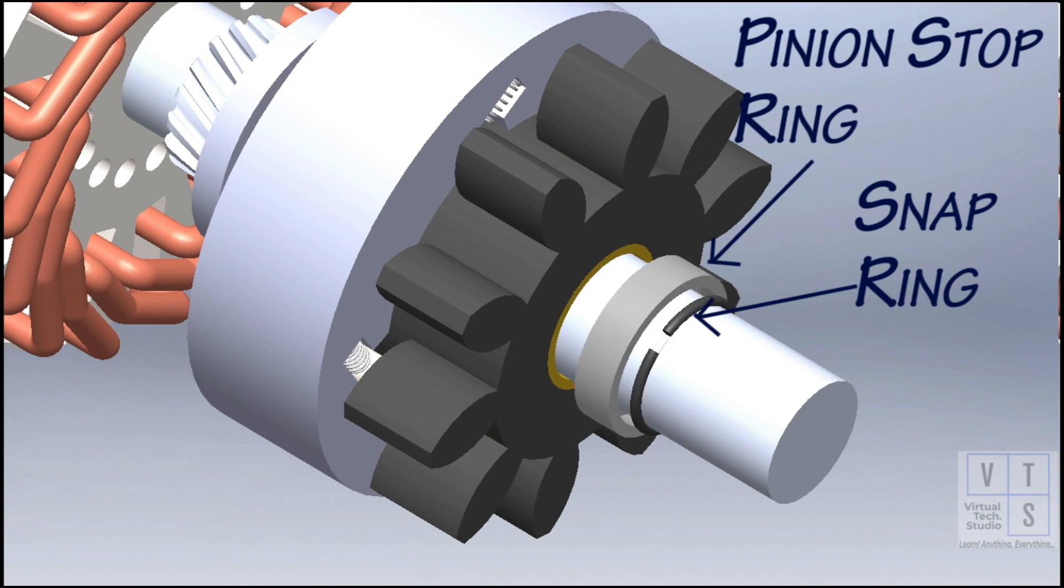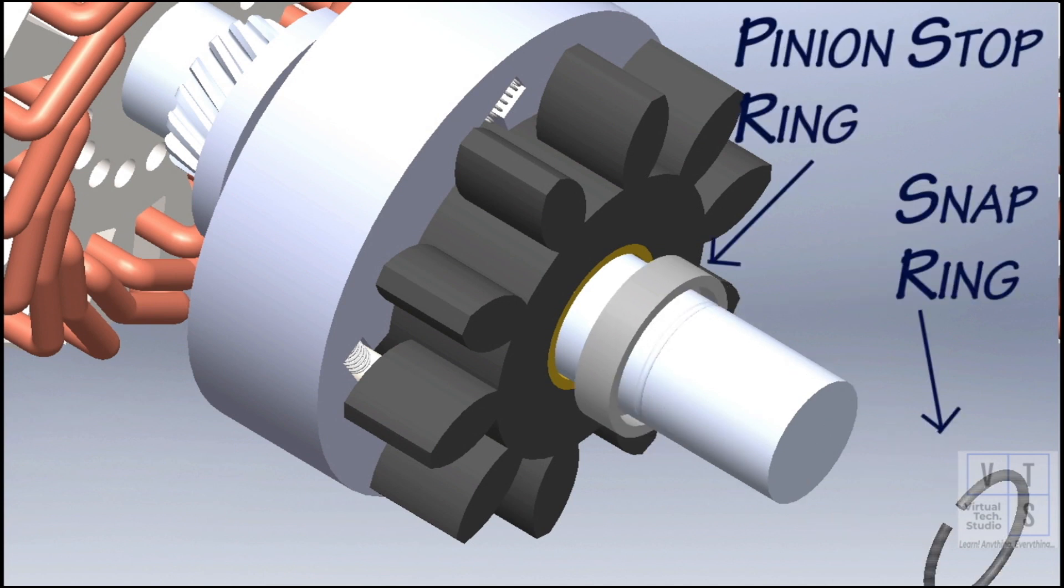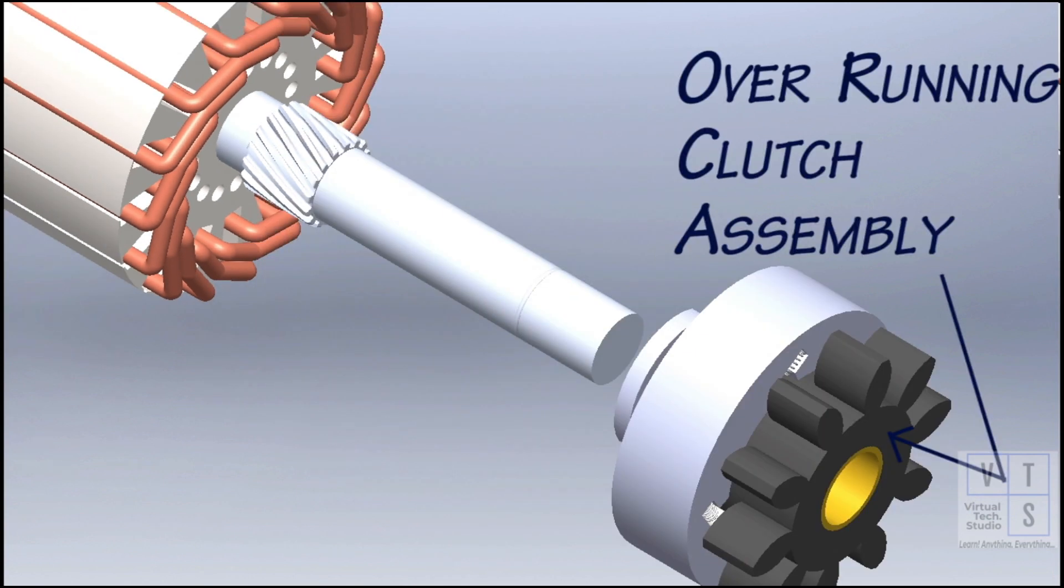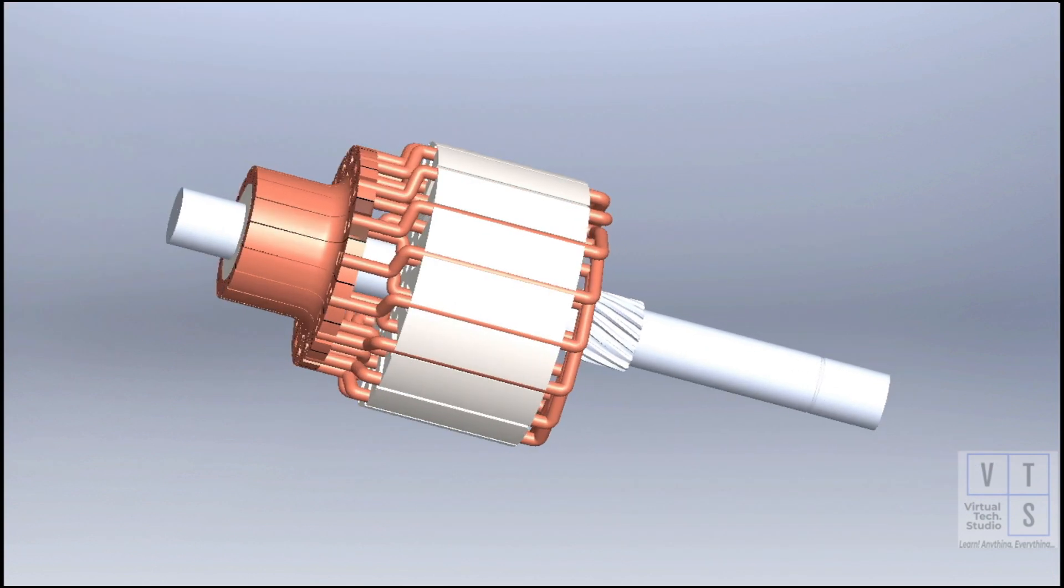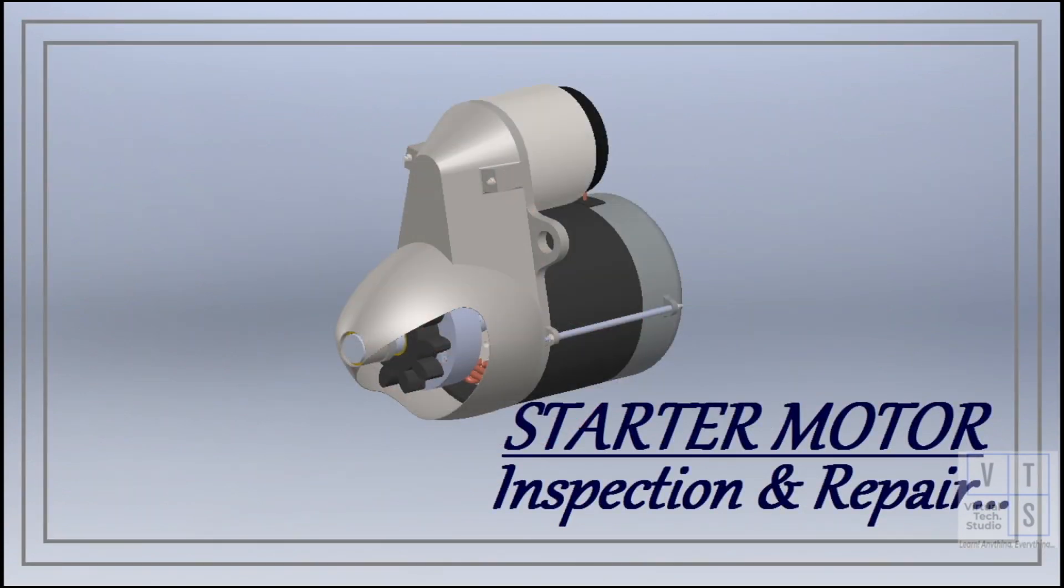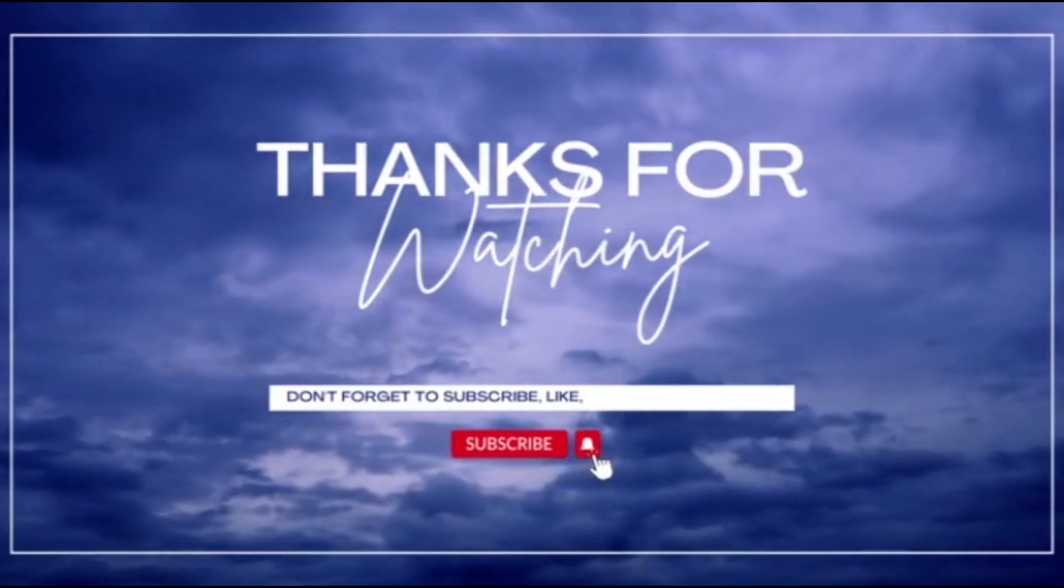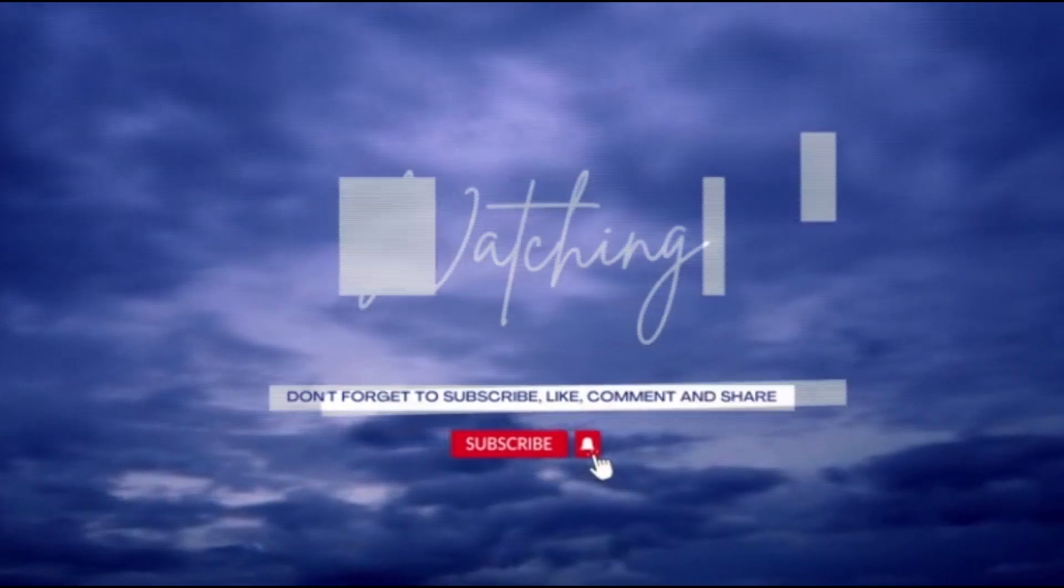Draw pinion stop ring toward overrunning clutch side and remove snap ring. Then pull out the pinion stop ring. Pull out the overrunning clutch assembly from the armature.